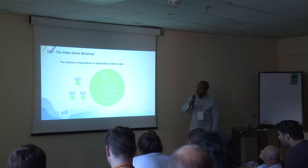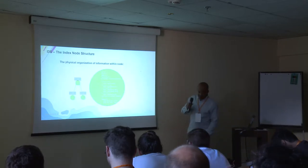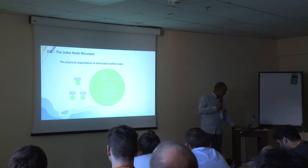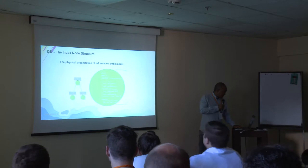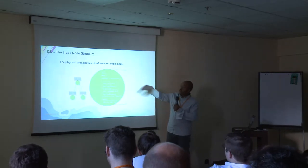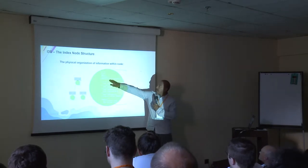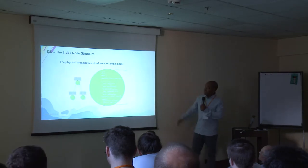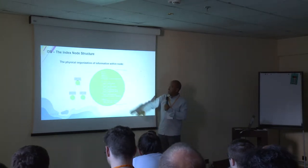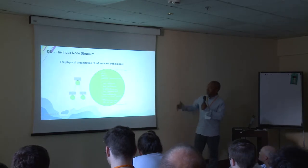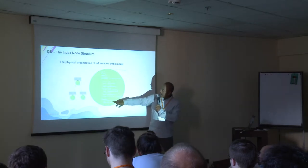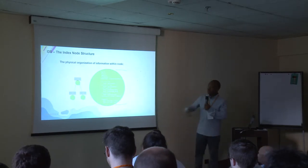The node index document is central to the i3s data organization. This document contains the LOD selection criteria — the metric you'd use to switch to a different node. One such metric is maximum screen threshold: basically the size in pixels. If the projected size is bigger than this value — for MBS, that's the diameter — you go ahead and render it; if not, you descend and get its children, which are referenced by the parent node. That's how the traversal continues.